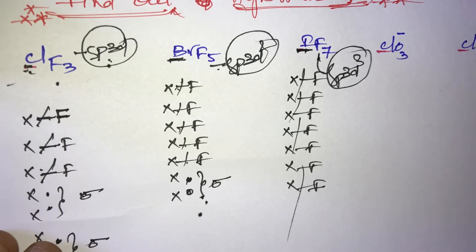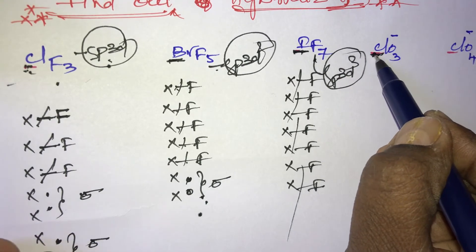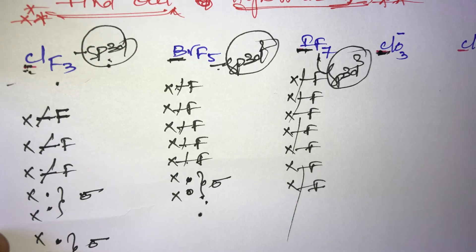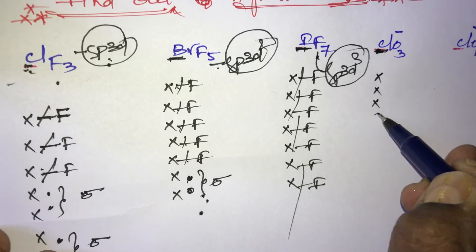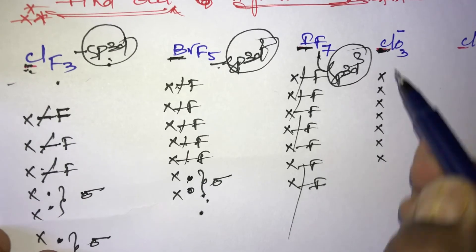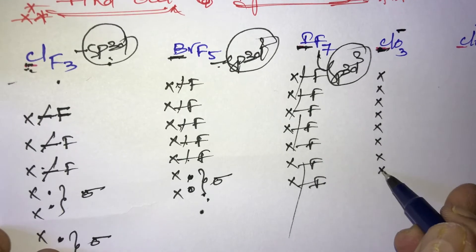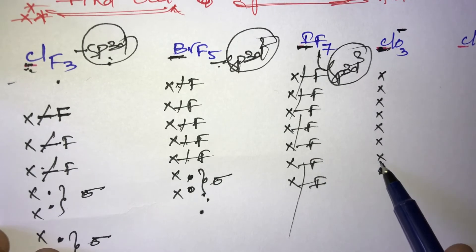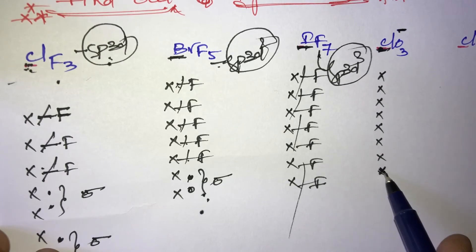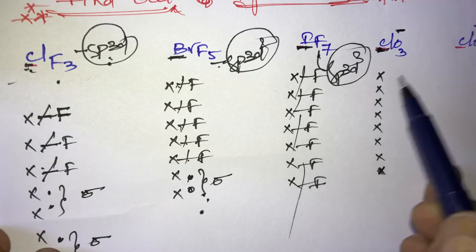Next, in ClO₃⁻, what is the hybridization of chlorine? Chlorine belongs to the 17th group (7th group) and can maximum bond seven, giving seven electrons. The minus charge means one extra electron is gained, so total electrons = 8. There are three oxygens, and oxygen is a diatomic molecule that always occupies two bonds.